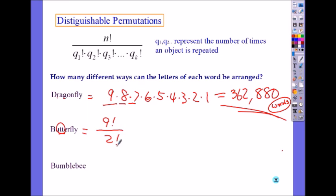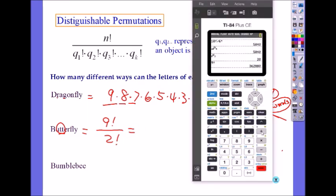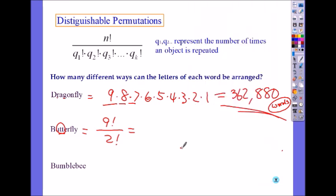Meaning two factorial is what? Half, right? Two times one. So it's only half of this which will be 181,440 - 181,440 words.